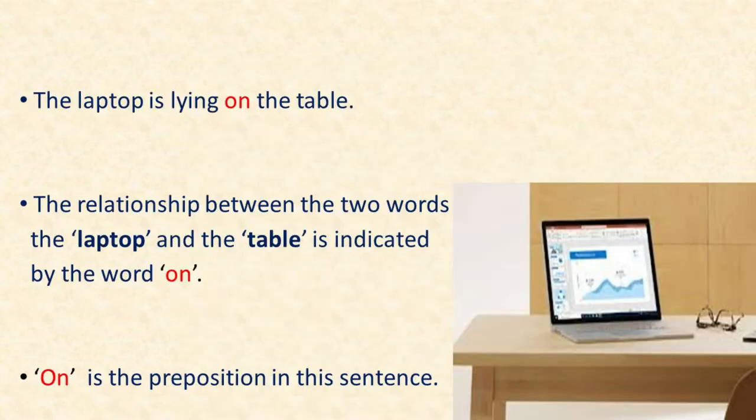Okay. Now look at this sentence. It says that the laptop is lying on the table. Are you able to understand what this sentence is conveying now? Yes. It means that there is a laptop which is lying on the table.